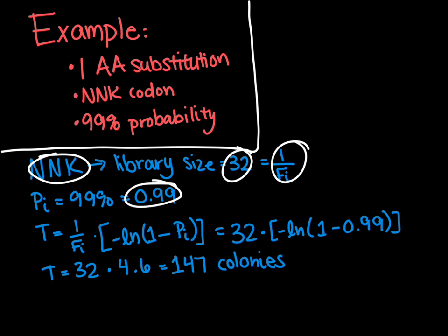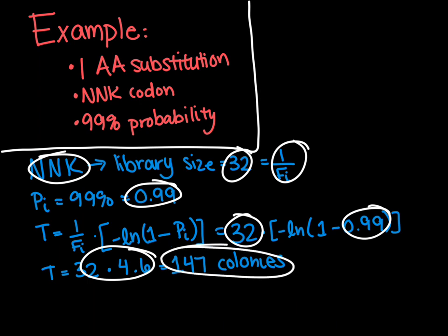Pi is 0.99 as this is our probability of screening every mutant. So if we plug this into the equation that we had before, we get 32 times the negative ln of 1 minus 0.99. So this gives us 32 times 4.6. And so when we multiply that together, we get 147 colonies that we need to screen to ensure with a 99% probability that we have screened every mutant.